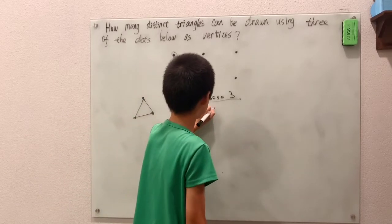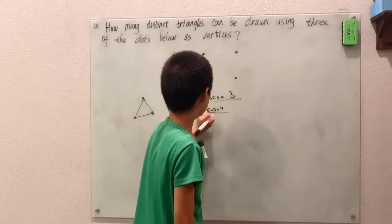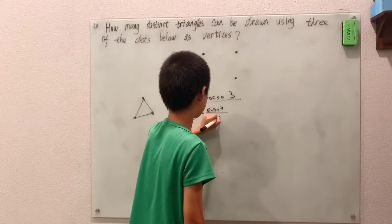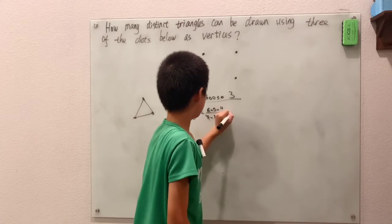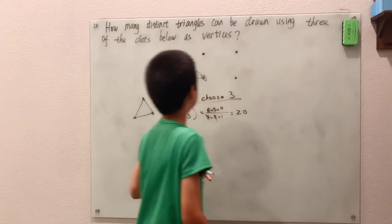Six choose three is six times five times four over three times two times one. Three and two cancel out of the six. We have four times five is twenty.